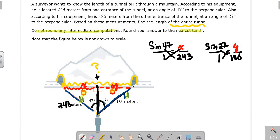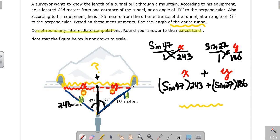And then this other piece, we'll call it Y. That's also sine, because it's opposite and hypo. Sine 27 over 1 equals our Y piece over 186. Cross multiply. So both our X and our Y, which we are trying to add together, X is going to equal the sine of 47 times 243, plus our Y is the sine of 27 times 186. And X plus Y is going to equal the giant yellow squiggle.